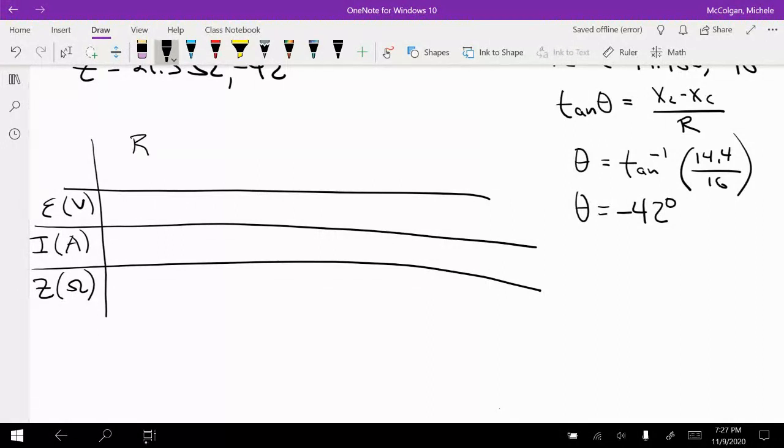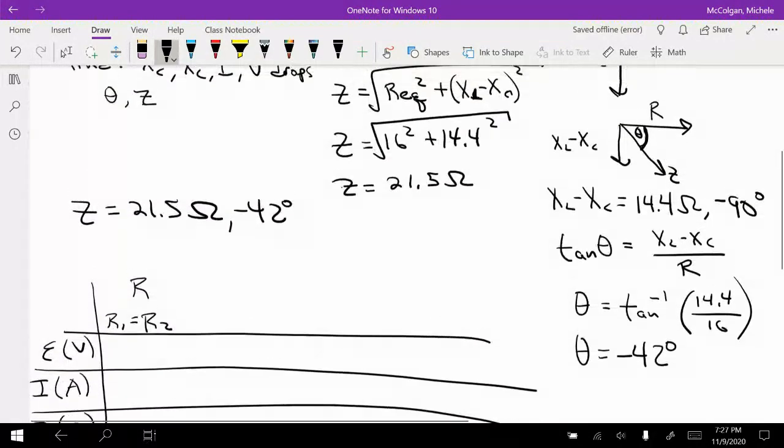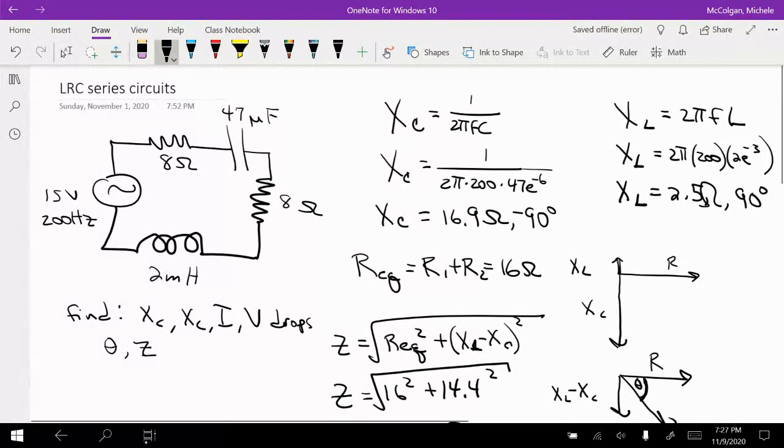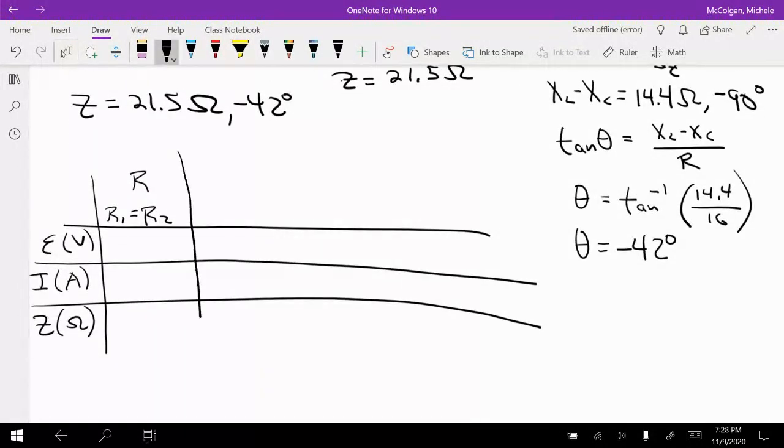And this is going to be my R. So R, where R1 is equal to R2. So because it's a series circuit, I know I'm going to have a voltage drop across each one of these. But I'm just going to use one column for that. This is the drop across each one. So I'm going to have 8 ohms and zero degrees.